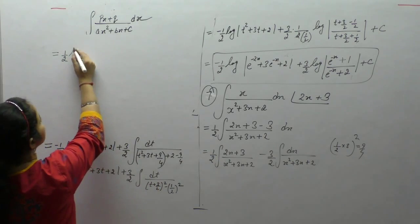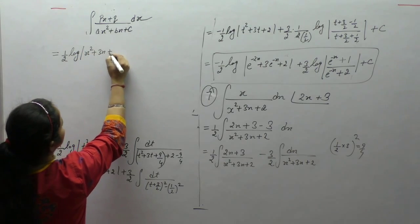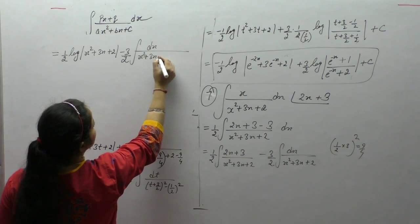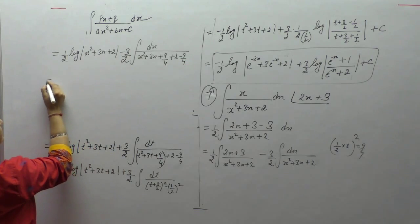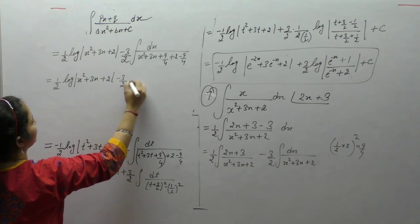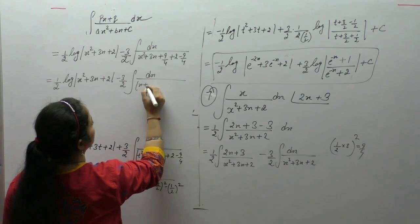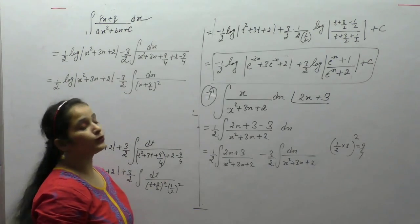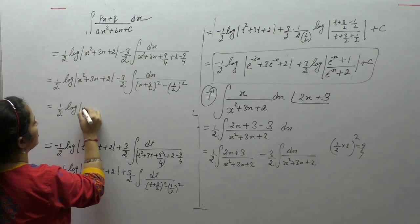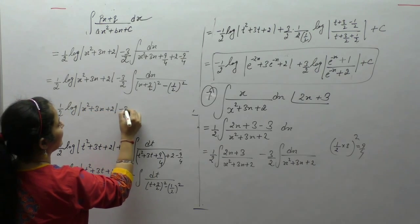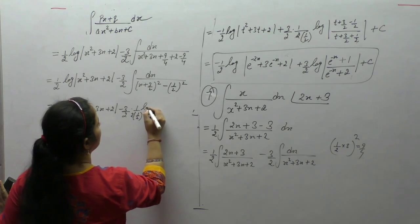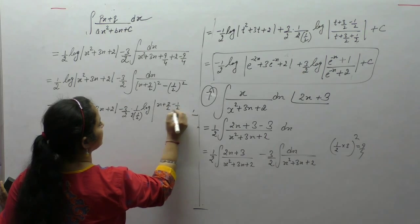We get f'(x) upon x squared plus 3x plus 2 minus 3/2 integral of dx upon x squared plus 3x plus 9/4 plus 2 minus 9/4. This gives 1/2 log of x squared plus 3x plus 2. Complete the square: dx upon x plus 3/2 whole square. Take the LCM: 4 into 2 gives 8, minus 9 is minus 1/4, written as 1/2 whole square. So 1/2 log of x squared plus 3x plus 2 minus 3/2, applying the formula: integral of 1 upon x squared minus a squared equals 1 upon 2a log of (x minus a) upon (x plus a).